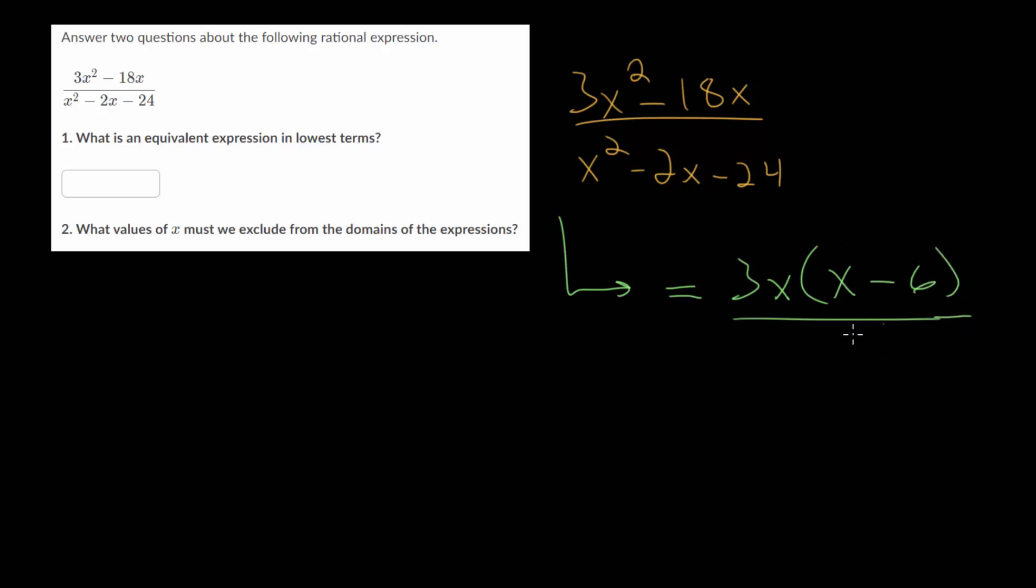In the denominator we'll need to factor this as a product of two binomials. Since the coefficient on x squared is 1, we can assume the first term in each is just x, since x times x gives us x squared. These next two terms multiply to minus 24 and add to negative 2. So let's consider what multiplies to negative 24. It could be minus 1 and 24, minus 2 and 12, minus 3 and 8, minus 4 and 6, or we can switch all the negatives.